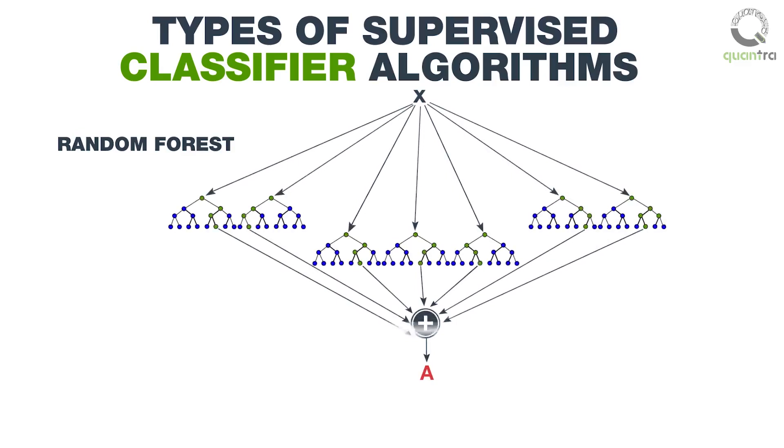Then, each of the decision trees allots a class (A, A, A, B, B, A, A) to the data point. The class in which the data point is allotted the maximum number of times by the classifier is selected, which is A in this case.